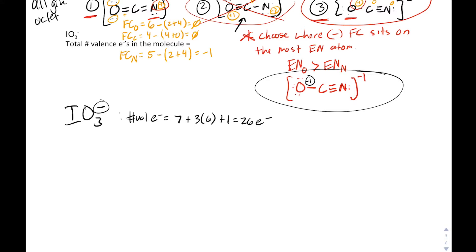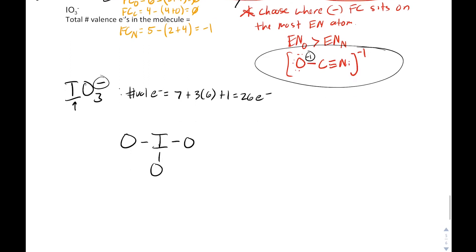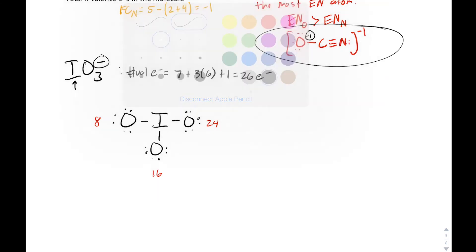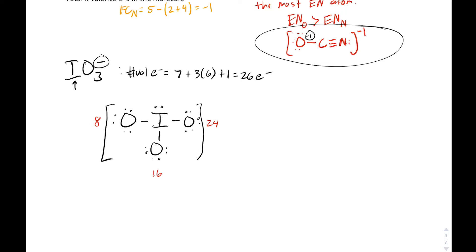Next, we find our central atom, which is iodine — our least electronegative atom — surrounded by those three oxygens. We then draw out and give all terminal atoms an octet. Counting electrons used: 8, 16, 24 — we still have two more, which we use to give iodine its octet. We also note the negative one charge.